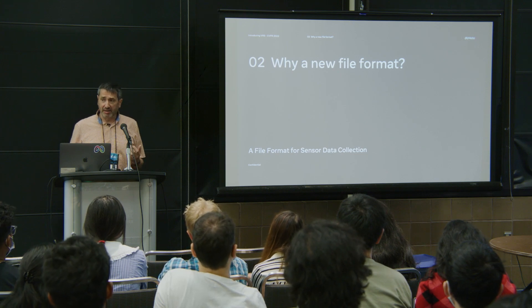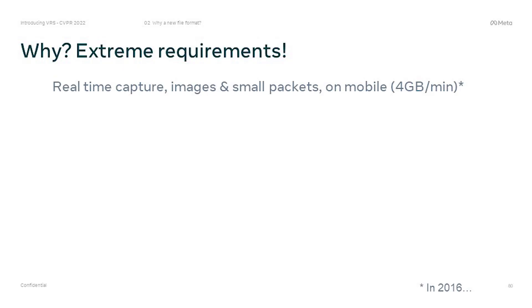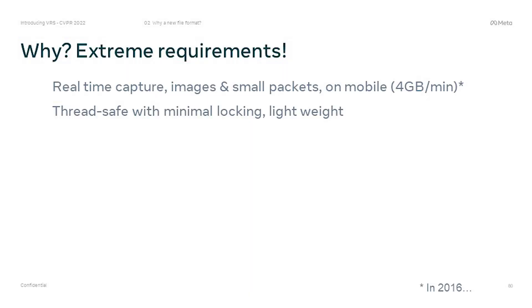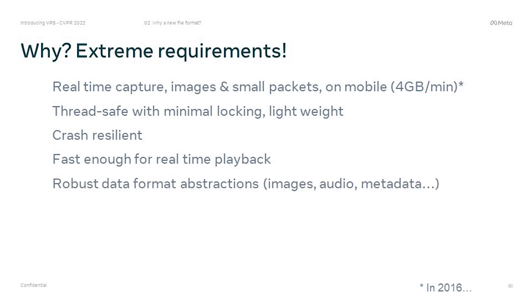So why do we need a new file format? In 2016, when I started to work at Oculus, we got the first early prototypes of the Quest — the Meta Quest device you know today. We found that we had very extreme requirements. We needed to capture in real time 8 streams of images at 30Hz, plus IMU data at 1kHz, all producing 4GB of data per minute, which on a fairly weak mobile chipset was really difficult. For that we needed a C++ library that was thread-safe with minimum locking, extremely lightweight so we could record information while playing content, crash resilient, fast enough for real-time replay, and with robust data format abstraction so we could record images, audio, and metadata all at the same time.